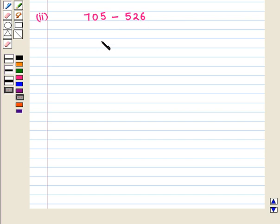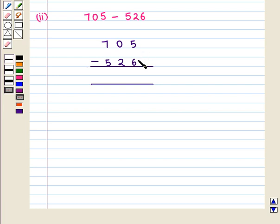We write 705, and below it we write 526. Now we start subtracting from the units place. Since the number to be subtracted, 6, is larger than 5, we rename 5 as 15, rename 0 at the tens place as 9, and rename 7 at the hundreds place as 6.